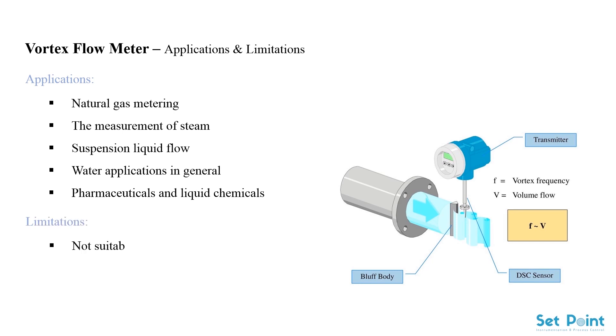Limitations: not suitable for very low flow rates. A small length of straight pipe is required upstream and downstream of the vortex meter.